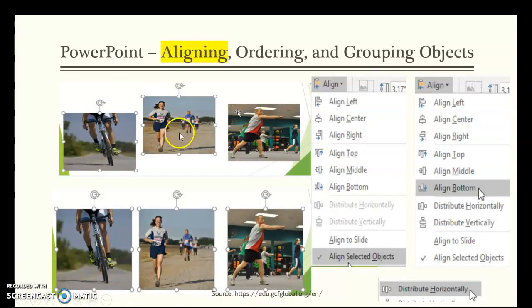Aligning, if you look at the top one, they're all uneven. You could actually just choose, first select all of them by clicking the first one, then hold shift and select the other two, and then choose align selected objects, and then click align again and choose align so that they're even on the bottom. Or you could distribute them horizontally.